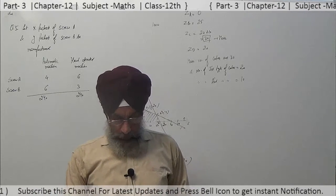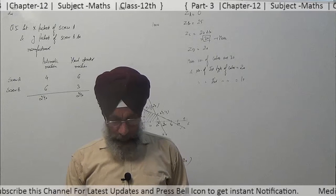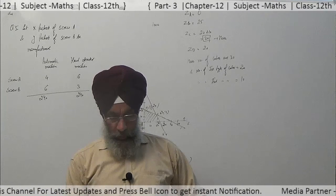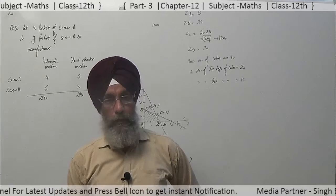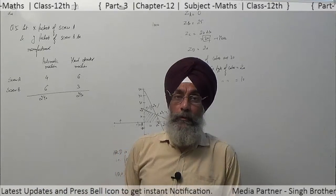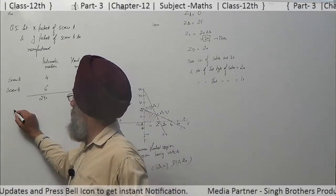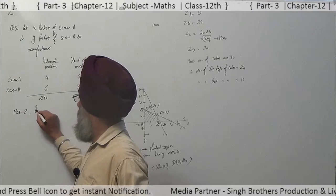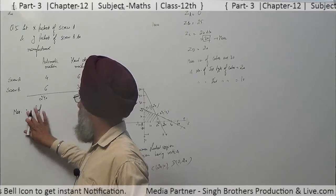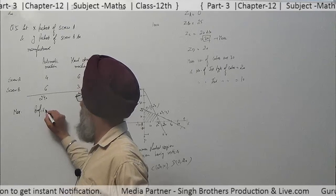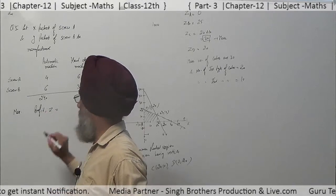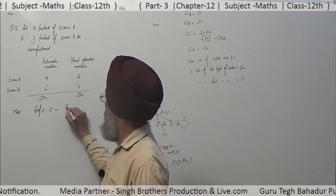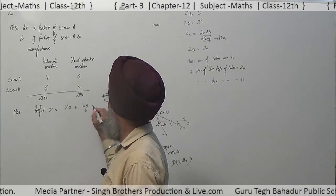Each machine is available for at most 4 hours per day, which means 240 minutes. The manufacturer can sell a package of screw A at a profit of Rs. 7 and screw B at a profit of Rs. 10. Since we are dealing with profit, we will maximize it. Maximize z = 7x + 10y.